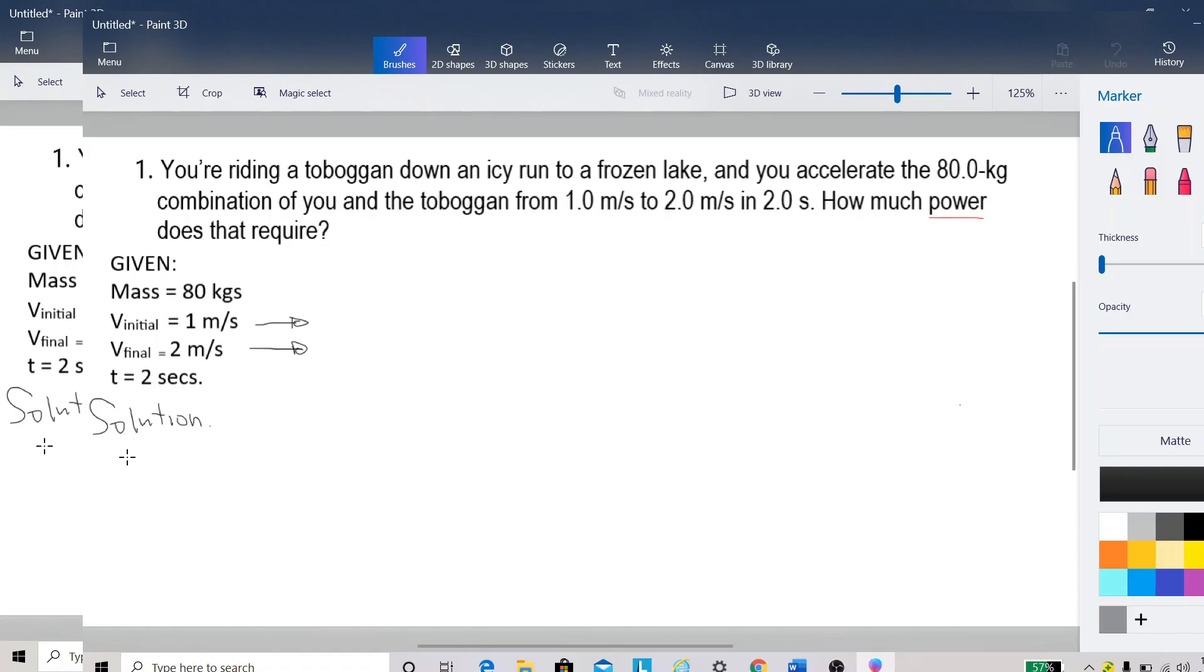Because we are given the initial and the final velocities, therefore we can use W. And we are also given the mass here so we can use W as the change in kinetic energy.